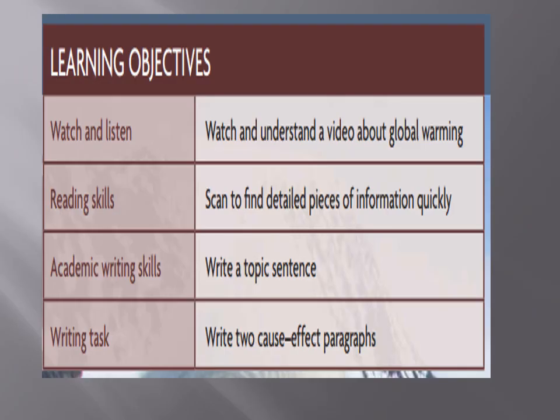The learning objectives in this unit: you have to watch and listen, understand a video about global warming, and reading skills — learn how to scan to find detailed pieces of information quickly. Academic writing skills: write a topic sentence, and the writing task is to write two cause-effect paragraphs.